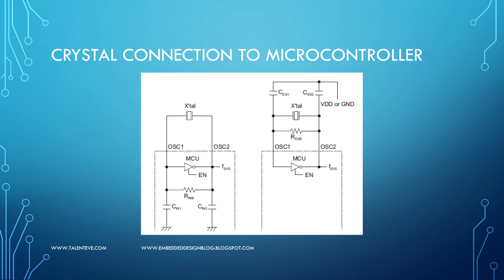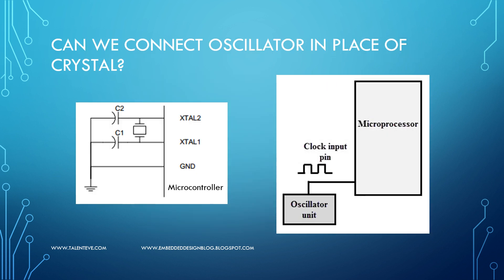To give a brief of how a crystal works: the buffer generates a signal 180 degrees out of phase, and then the corresponding resistors and capacitors help to provide an inversion of it so that the total signal generated does not change in phase. The capacitors also help in resonance to generate the required frequency.